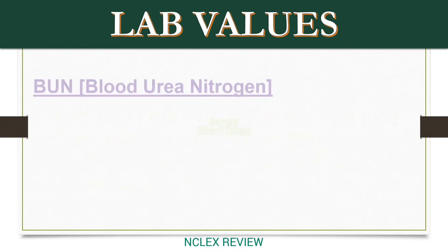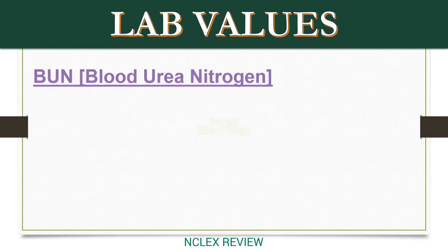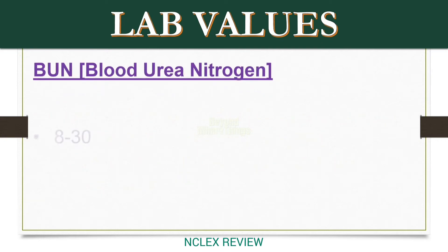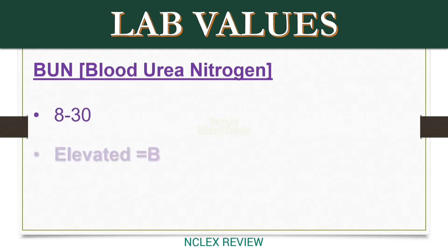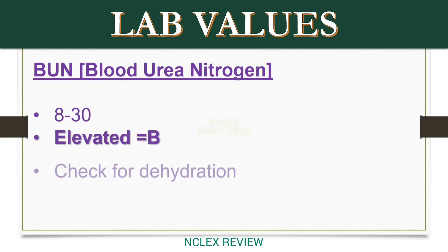BUN — Blood Urea Nitrogen. Normal range: 8 to 30. Elevated equals B. Check for dehydration.